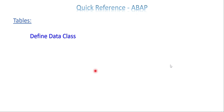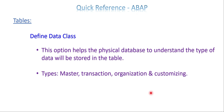Data class is found under technical settings. Inside the technical settings you have an option called data class. The data class gives information to the backend physical database to understand what type of data will normally be stored in this table. Some action happens in the physical database based on this. The types you can see are master, transaction, organization, and customizing. It keeps increasing depending on the business version — previously four or five types, but now you can see up to nine.